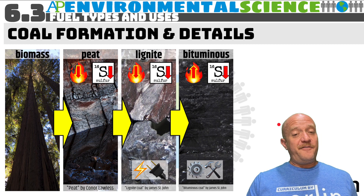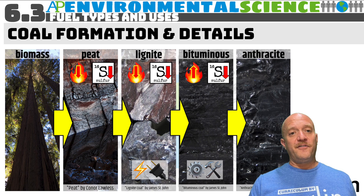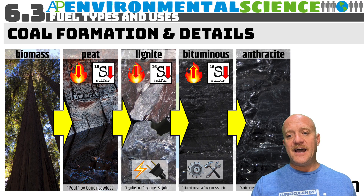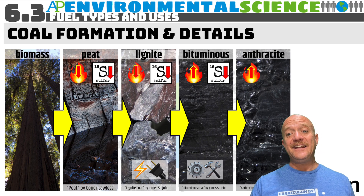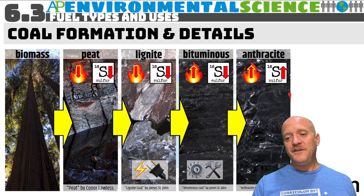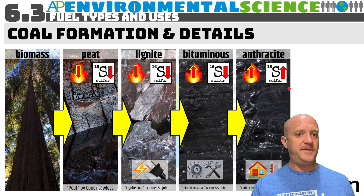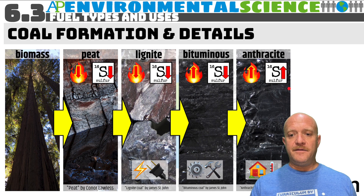If it condenses even more, you get the most pure form of coal — anthracite. Anthracite is not as prevalent around the world anymore. It has a very high heat content, but also a very high sulfur content. Because of that high sulfur content, we don't want to use it at industrial or large scale, so it is used predominantly for smaller applications like home heating.